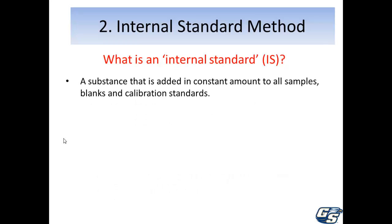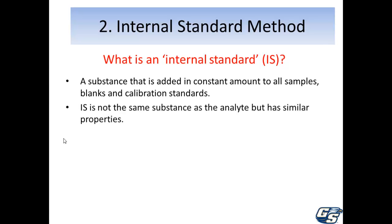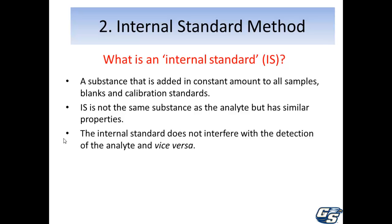An internal standard is a substance — a material — that is not the same as the analyte but has similar properties. It might have a similar molecular weight and similar structure, but it's not exactly the same. It generates a signal that can be kept separate from the signal coming from the analyte, but it generates the same type of signal fundamentally, just at a different enough wavelength or characteristic that it can be distinguished from the analyte.